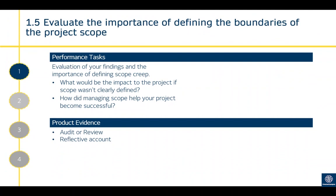Criterion 1.5 is evaluating the importance of defining the boundaries of project scope — this is more of a reflection. However, I would not treat this as a typical question. Make sure when you're covering this point it is part of a holistic statement — you're writing a statement on scope and ensuring you reflect within it. If you reflect within a holistic statement that outlines what you contributed towards planning project scope, this will cover this point. It shouldn't really be a separate question.